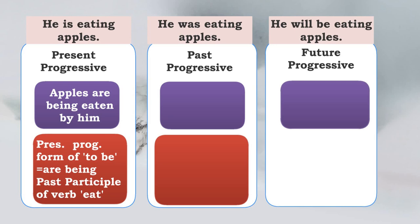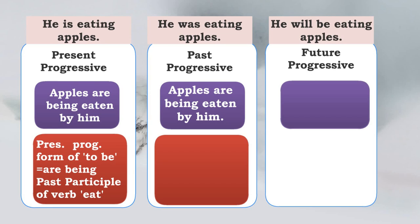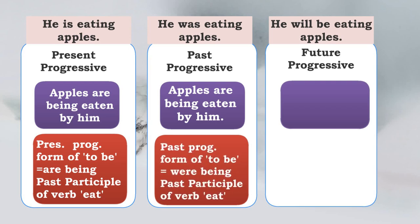Now look at the second sentence: 'He was eating apples' — past progressive. The passive should begin with 'apples.' It was 'was eating,' so the 'to be' form of 'be' in past is 'were.' Therefore it should be 'Apples were being eaten by him.' But look at the transformed sentence given — there is a mistake: it says 'are being' instead of 'were being.' The past progressive form of 'to be' must be 'were being,' not 'are being,' and the past participle of the verb 'eat' is 'eaten.'